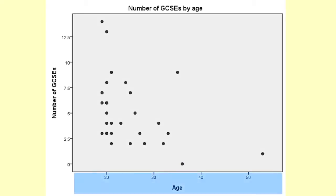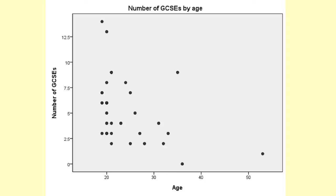Across the chart is age, going from around 20 on the left up to someone over 50 on the right. The chart has a dot or cross for each person in the dataset — from memory there were 34 people, so there are 34 crosses on the chart. Each one indicates that person's age and the number of GCSEs they got.